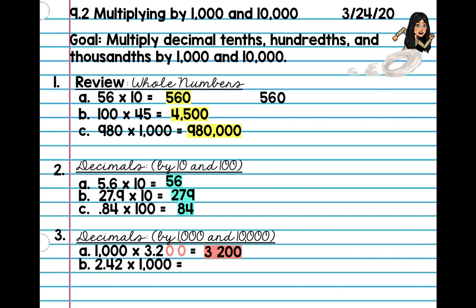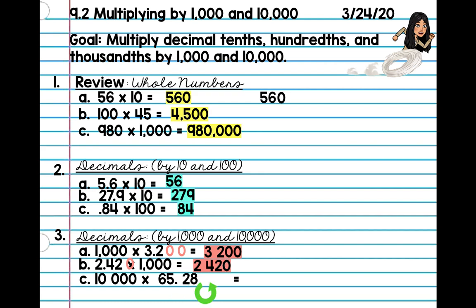Alright, let's try letter B. Go ahead and pause and do this one by yourself. Okay, so we have three zeros for 1,000, so I'm going to move my decimal place over 1, 2, 3. Our product is 2,420. Alright, final one — 10,000. So 10,000 times 65.28. We know that 10,000 has four zeros, and we're just going to move this over four times. Start at your decimal: 1, 2, 3, a zero goes there, 4. So now my decimal is here, and my product is 652,800.